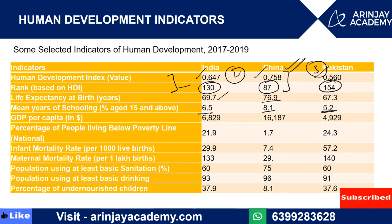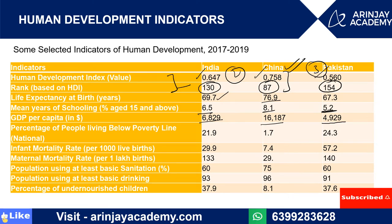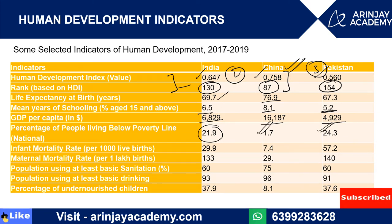If we talk about GDP per capita in dollars, it is 6,829 for India, 16,187 for China, and 4,929 for Pakistan. If we talk about the people who are living below the poverty line, in India it is 21.9 percent, in China it is 1.7 percent, and in Pakistan it is 24.3 percent.